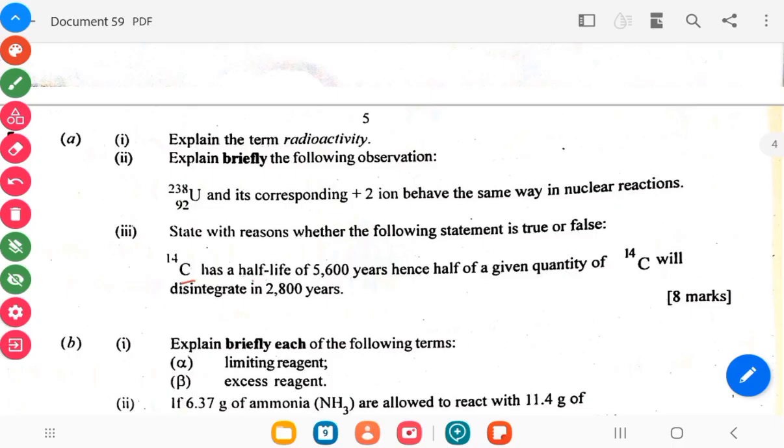Carbon-14 has a half-life of 5,600 years. Hence, half of a given quantity of carbon-14 will disintegrate in 2,800 years.